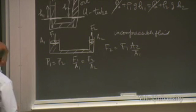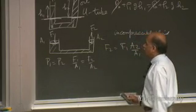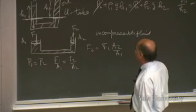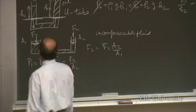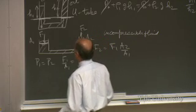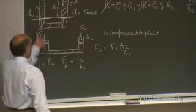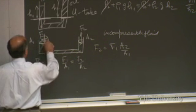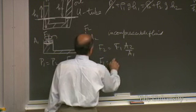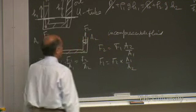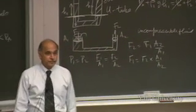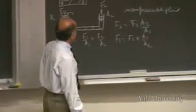To amplify force: imagine an elephant on one side and you apply a small force on the other. The force you apply times A1/A2 gives the force on the elephant's side. If A1/A2 is 100, applying one newton here gives 100 newtons on the other side. That's how you convert a small force into a large force. This is an old trick — even older is the lever: a tiny weight at a long arm can lift a big weight at a short arm.